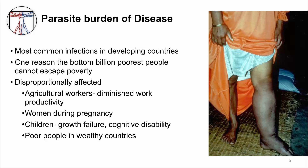Pregnant women infected with specific helminths, like hookworm and schistosoma, can have severe anemia, and this can lead to morbidity and mortality of both the mother and the baby. Children with helminth infections suffer from growth stunting — that is, they don't grow well — and cognitive disabilities. They don't do as well in school and end up potentially decreasing their future earnings.